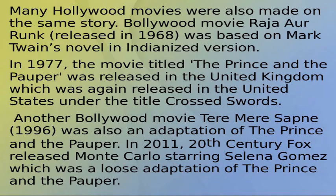In 1977, the movie titled The Prince and the Pauper was released in the United Kingdom, which was again released in the United States under the title Crossed Swords. Another Hollywood movie, Tere Mere Sapne, released in 1996, was also a loose adaptation of The Prince and the Pauper. In 2011, 20th Century Fox released Monte Carlo, starring Selena Gomez, which was also a loose adaptation of The Prince and the Pauper.